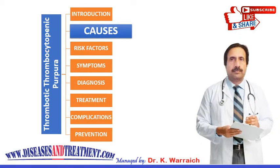What are the causes of TTP? There is an inherited form that transmits as an autosomal recessive trait, meaning both parents of an affected individual must carry a copy of the defective gene. The parents don't usually have symptoms — they are just carriers. This genetic form results from a mutation in the ADAMTS13 gene, which plays a role in producing an enzyme that allows blood to clot normally. Abnormal clotting occurs when this enzyme is not present.